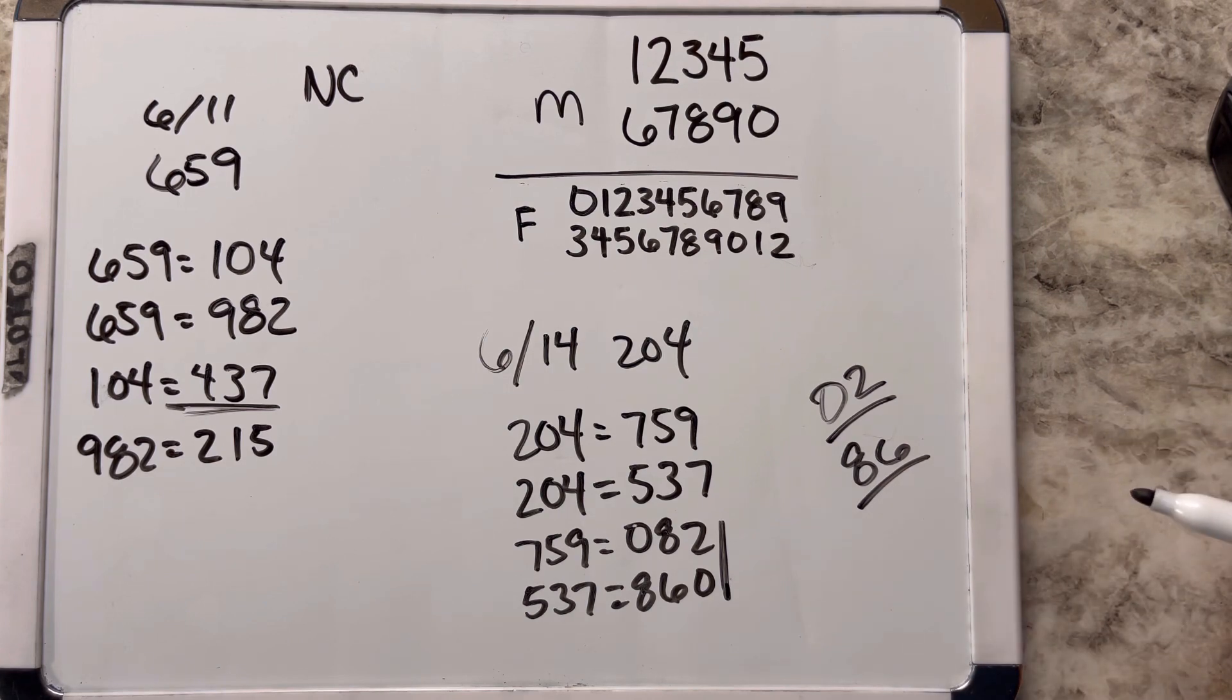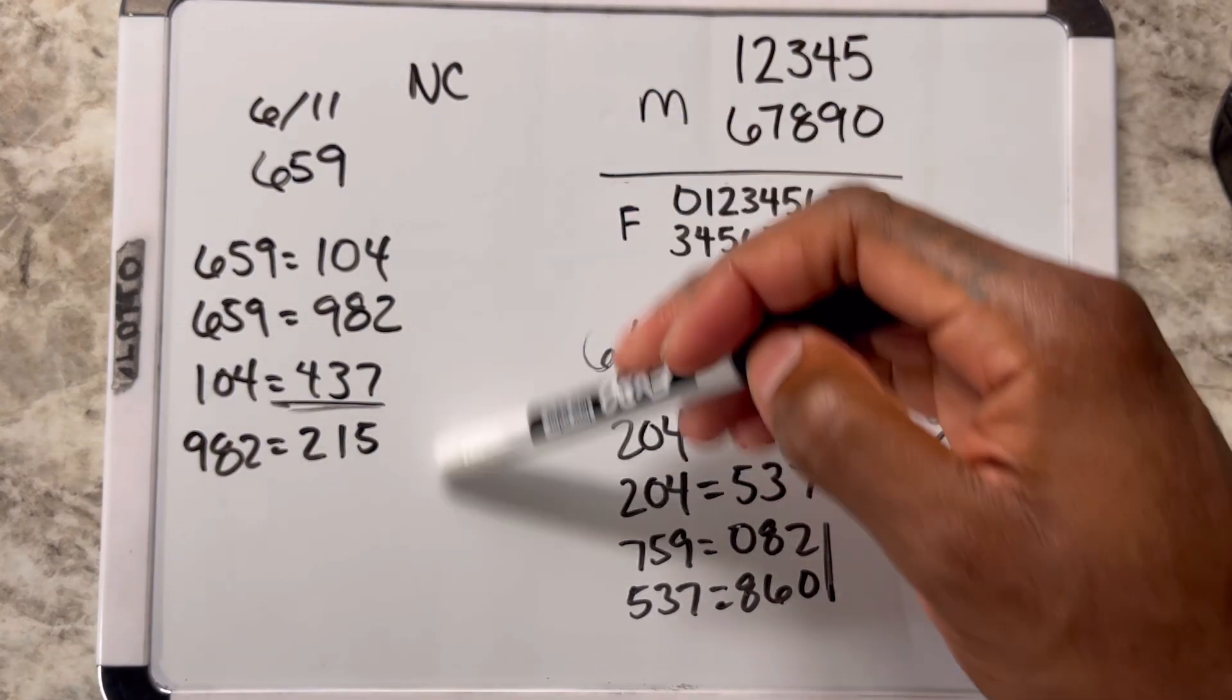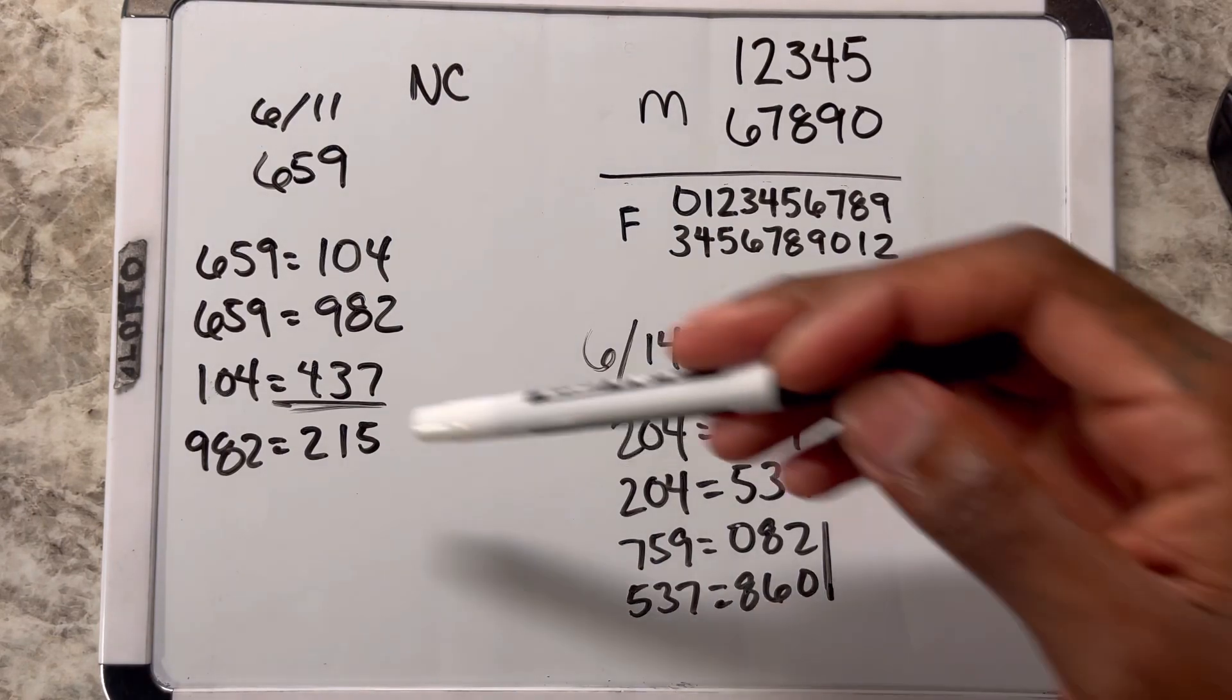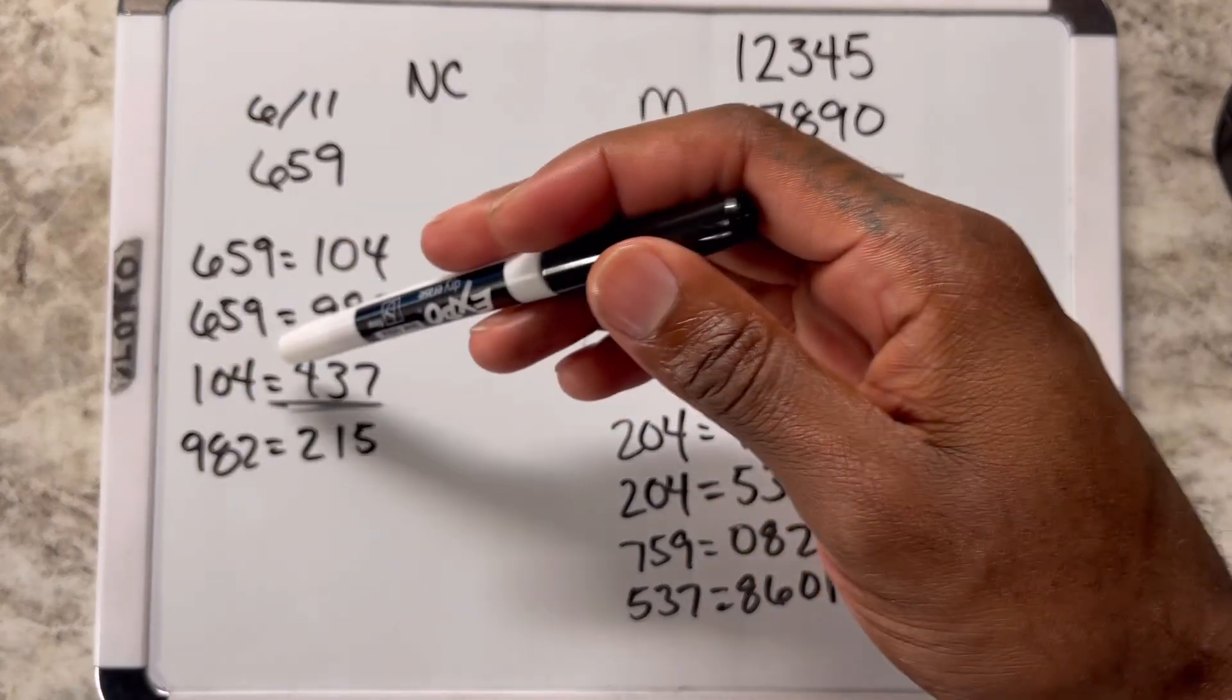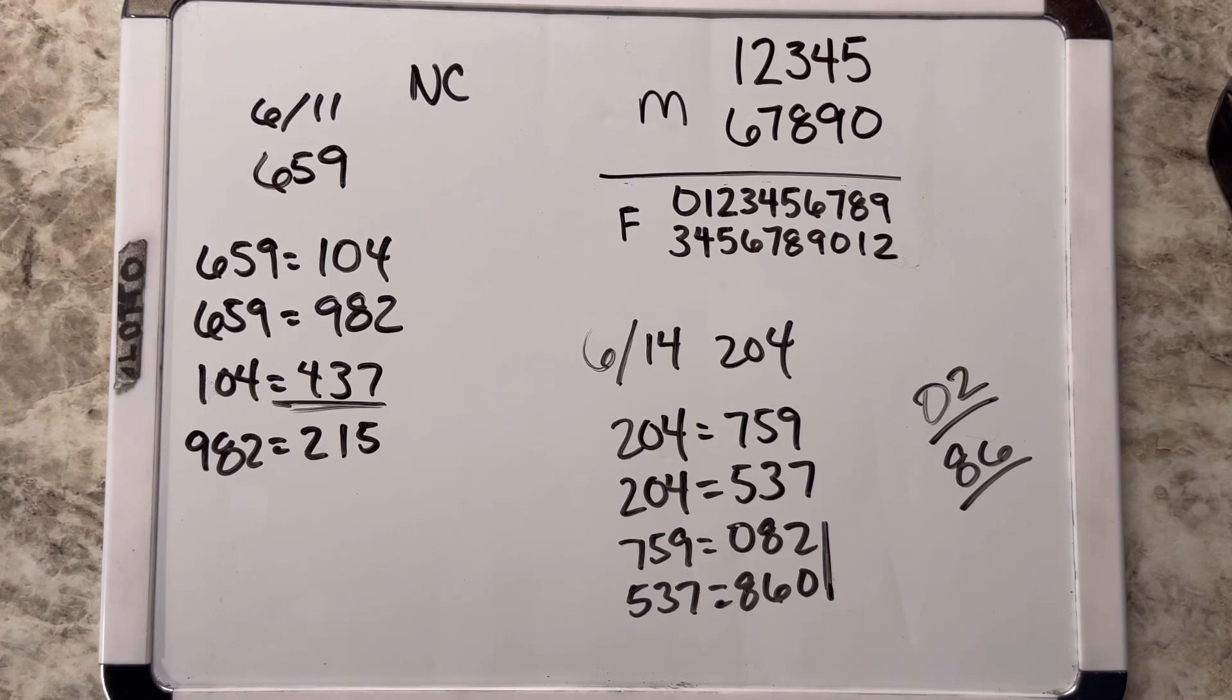That concludes today's video man. I hope this is very helpful. Like I said, you can do this in any state. Whatever state you're in, you can use this quick little simple strategy just to give you four numbers that you can play. As we've seen, converting that 104 to 437 actually gave us a hit number. Just try it out for your state, tell me what you think, and make sure y'all drop y'all states in the comment. Like, comment, share, subscribe. Peace.